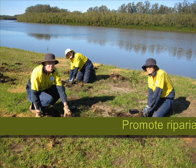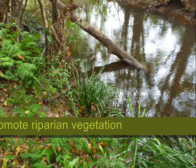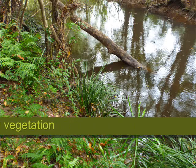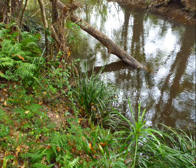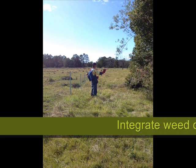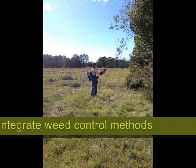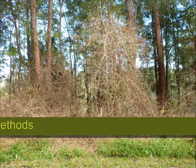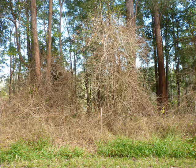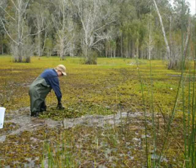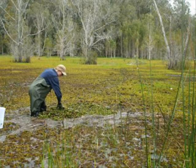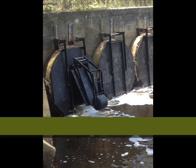Riparian vegetation reduces erosion as the roots of plants help bind the soil together. Integrate weed control methods considering manual, chemical and biological control. To achieve the best results, seek advice and assistance from your local land care group, catchment management authority, council or Wetland Care Australia.